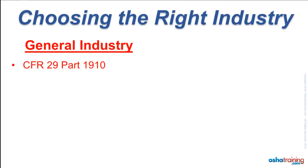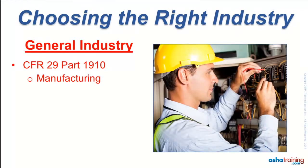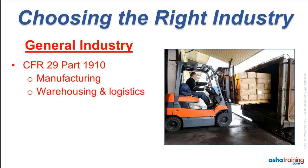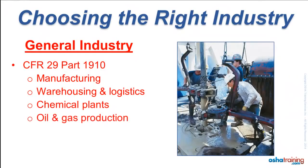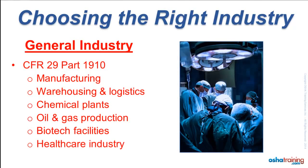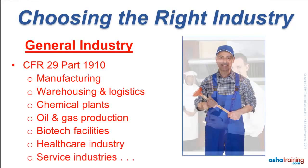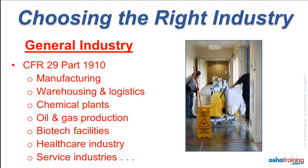The general industry courses cover most workers in the United States, including those employed at most factories. The manufacturing of most industrial and consumer products, including food products, and the maintenance activities at these operations would all be covered. So would employees in warehousing and logistics, chemical plants, oil and gas production including refineries, biotech facilities, workers in healthcare such as medical care providers and dental offices, and those in service industries such as plumbing, food and hospitality, and janitorial services, to name a few.